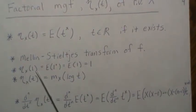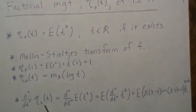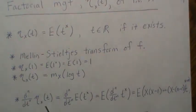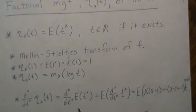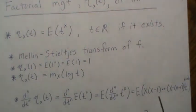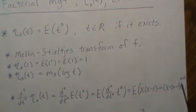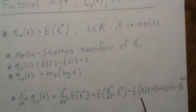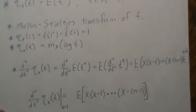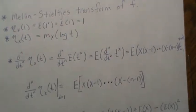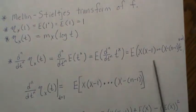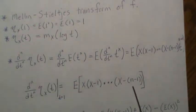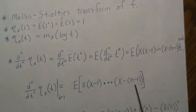If you take this definition and take derivatives of the factorial moment generating function, and assuming we can pass the derivative through the integral sign or the expectation, the derivative of t to the x becomes what's often called a falling factorial. If we evaluate the nth derivative at t equals 1, that piece becomes 1 and goes away, and we're left with the nth factorial moment — so called because there are n terms.